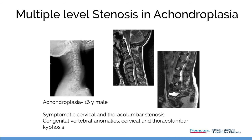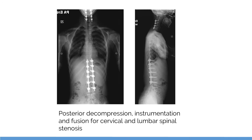Stenosis can be seen from the head to the bottom. Here's a young man who had symptomatic spinal stenosis affecting his arms, lower extremity function, and bowel and bladder, requiring decompression and fusion at both levels. I've only had to do this a few times, but it does occur occasionally.